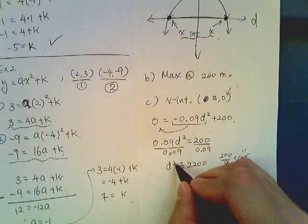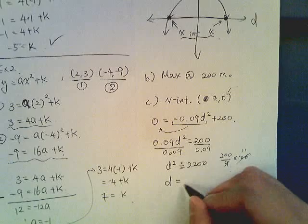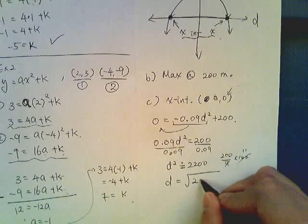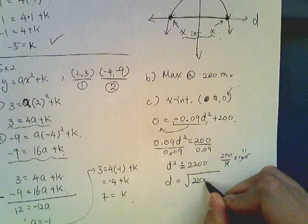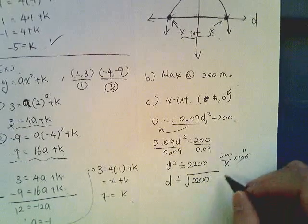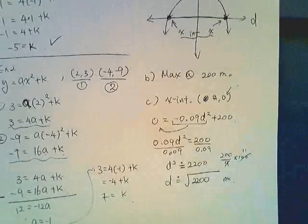Now since it's d squared, then d will be square root of 2000, approximately 2200 meters.